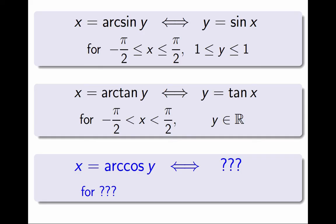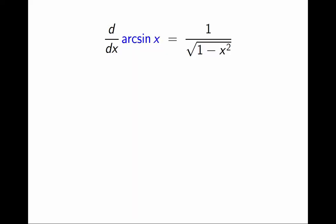To conclude the video, let's look at derivatives. In the previous video, I already found the derivative of arcsine. If you imitate the exact same derivation, you will obtain that arccosine has the same derivative as arcsine, but with an additional minus sign.